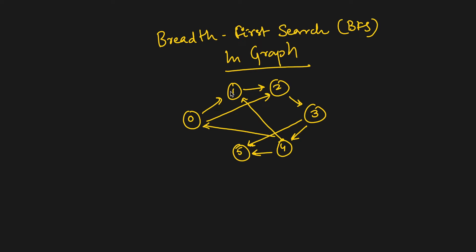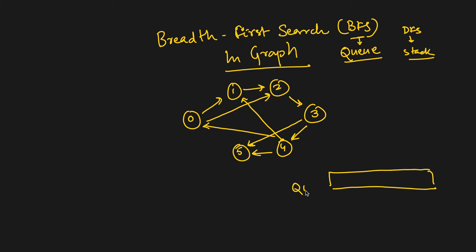For BFS we use a queue — always remember, BFS uses a queue and DFS uses a stack. We'll maintain a queue. One big difference between BFS in tree and BFS in graph is that in a graph we can have cycles.